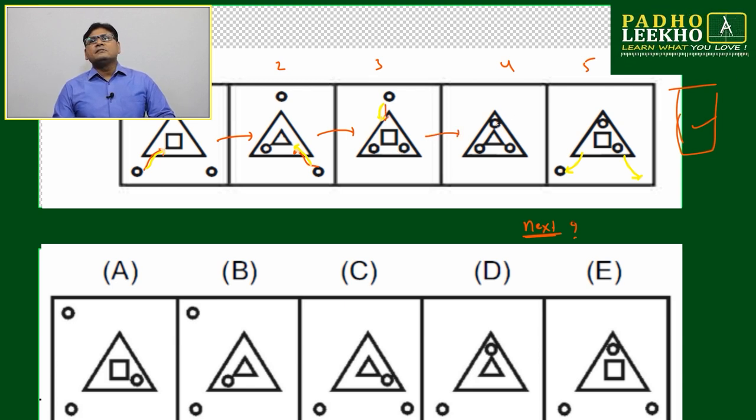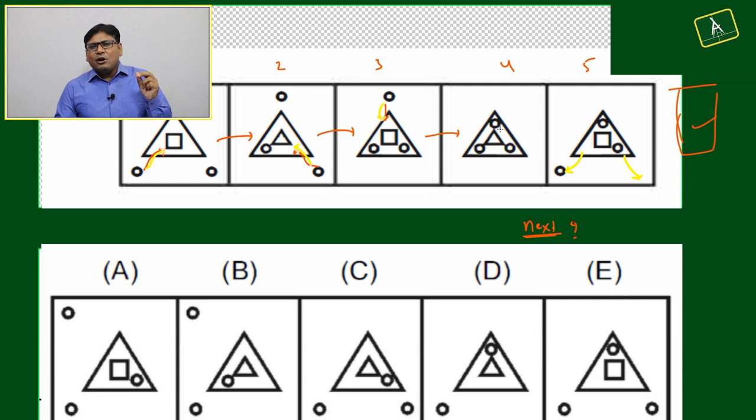What happened? From image 1 to image 4, outside whatever ball was there or dot was there or small circle was there, it has gone inside the triangle.